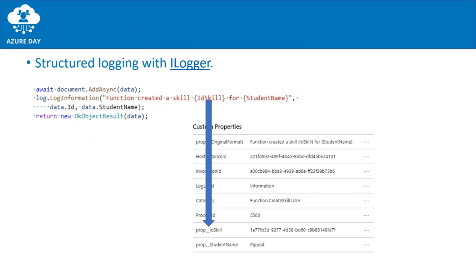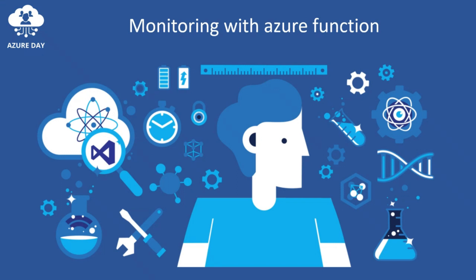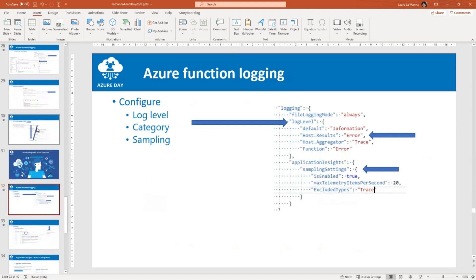Per realizzare il tracing distribuito non basta appoggiarsi a un valido sistema di logging strutturato — come l'interfaccia ILogger di Microsoft supportata in .NET Core — ma bisogna anche loggare le giuste informazioni. Ad esempio, per ricostruire il ciclo di vita di un'entità, potrebbe aver senso loggare il suo ID o tracciare quali corsi ha cercato di modificare un determinato studente. In sistemi basati su architettura a microservizi, se il logging non è fatto bene è impossibile effettuare operazioni di diagnostica; viceversa, un logging ben costruito permette di trovare problemi o colli di bottiglia nell'architettura molto velocemente.